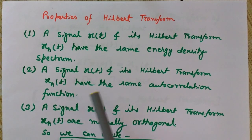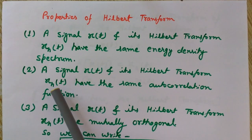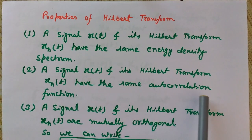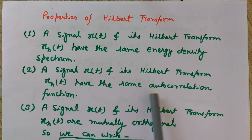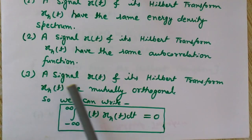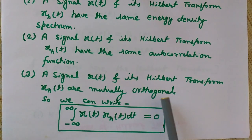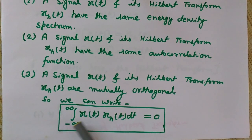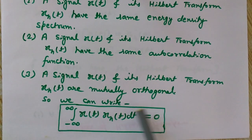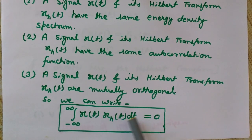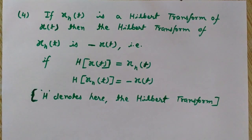So x(t) and its Hilbert Transform x̂(t) have the same auto-correlation function. The third property is that a signal x(t) and its Hilbert Transform x̂(t) are mutually orthogonal. Mathematically, this is written as the integral from minus infinity to infinity of x(t) · x̂(t) dt equals zero. This is the condition for orthogonality — if they are mutually orthogonal, this integral equals zero.